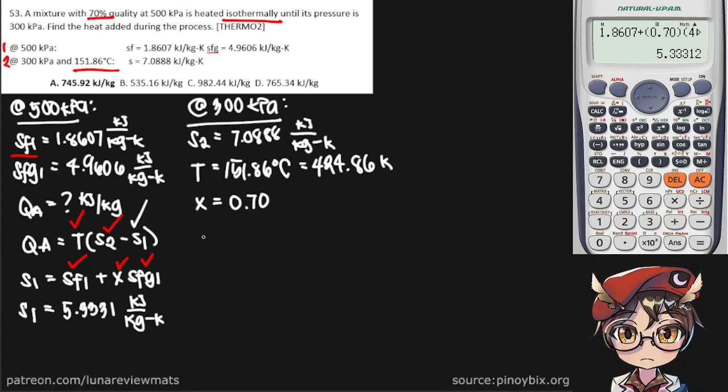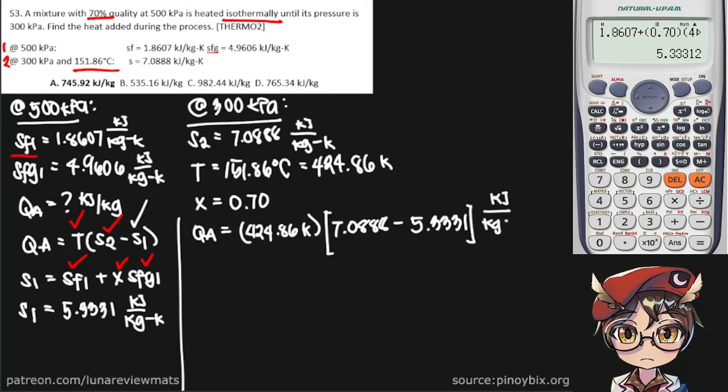So we can simply start putting our values in. It's in Kelvin. S sub 2 is 7.0888 minus S sub 1, 5.33331, that is in kilojoules per kilogram Kelvin. The Kelvins do cancel out.